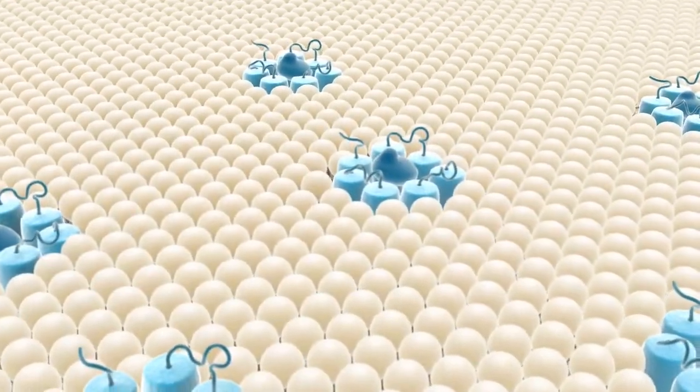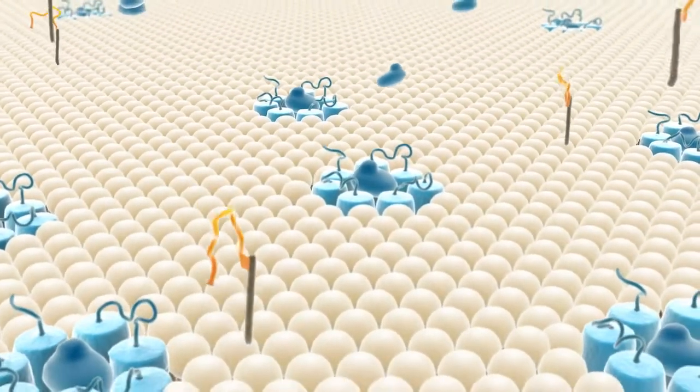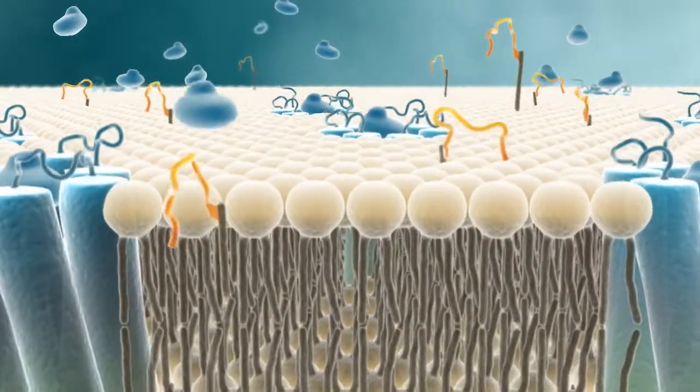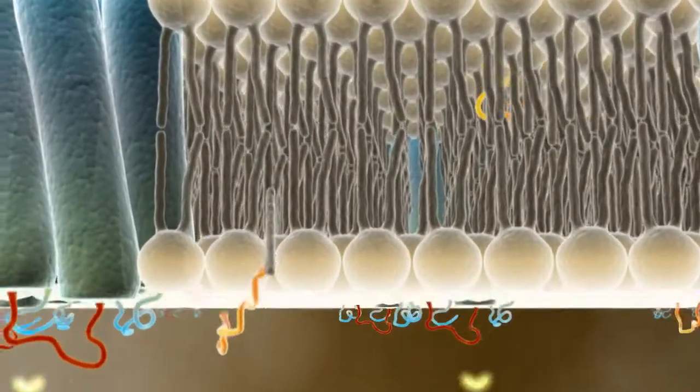While circulating throughout the body, pepducens attach to cells using the lipid tail as an anchor, then flip to the inside of the cell membrane.